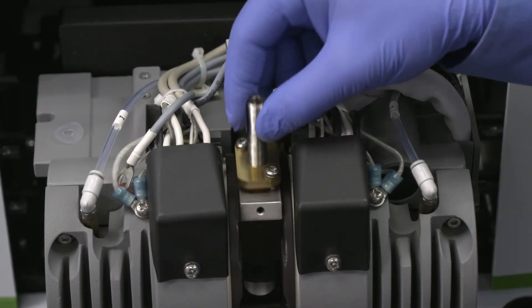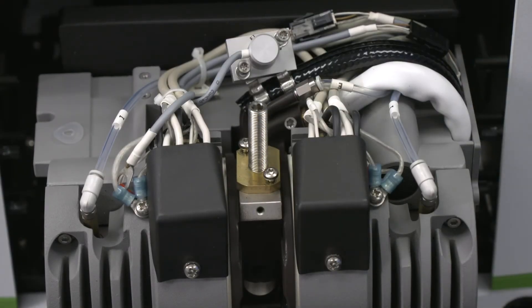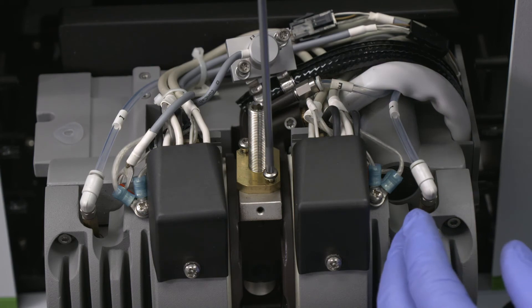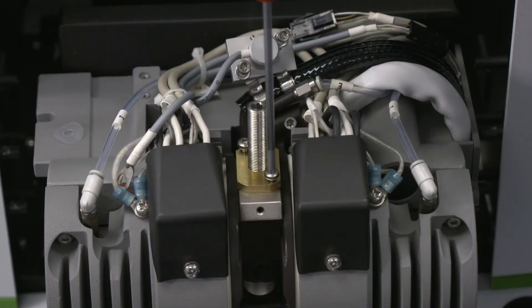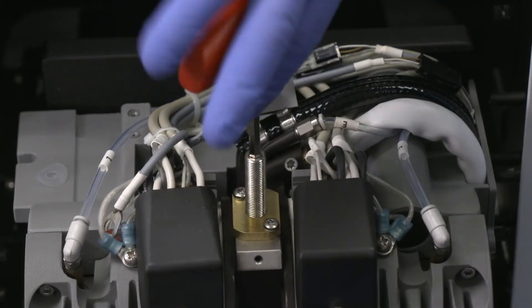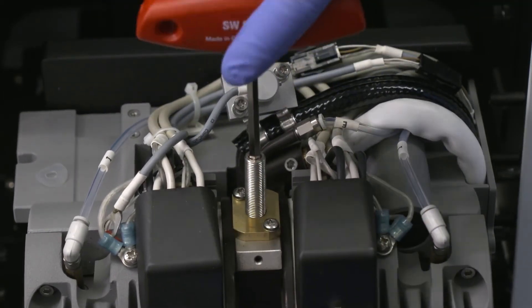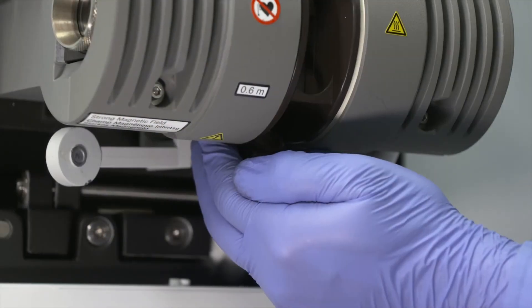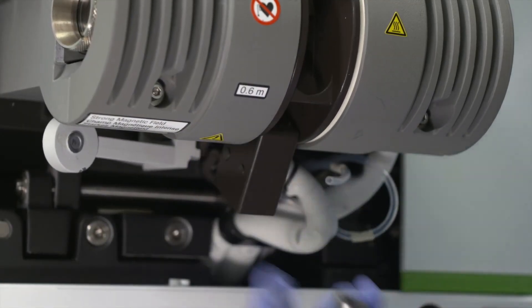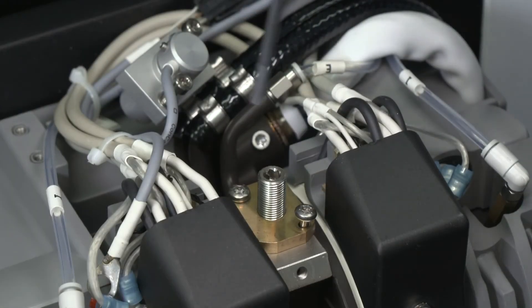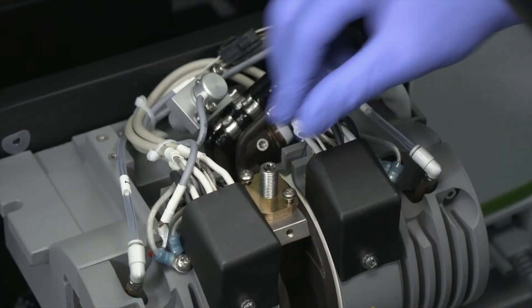Now, attach the removal tool to the rear contact housing with the two captive screws on the tool. Use the hex driver to screw the bolt on the removal tool into the tool to push out the contact, and then unscrew the two screws that secure the tool to the contact housing and remove the tool.